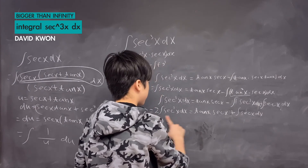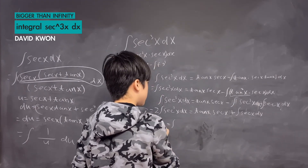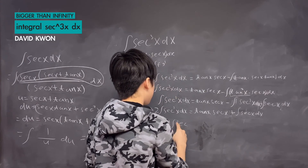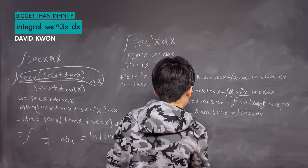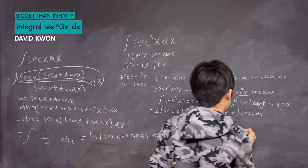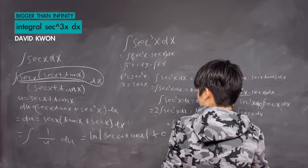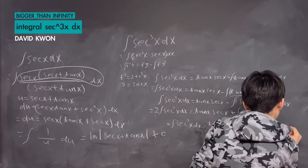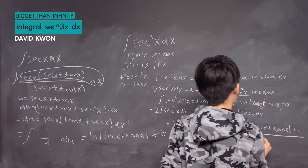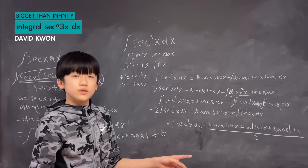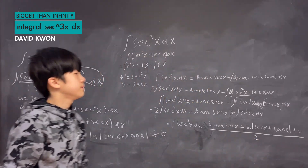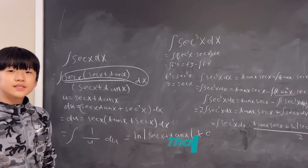Now let's simplify the whole thing by dividing by two, but we have to plug in that result first. Rewriting: the integral of secant cubed x dx is equal to tangent x times secant x plus ln|secant x plus tangent x| plus C, all divided by two. Thanks for watching and see you guys in the next video, bye.